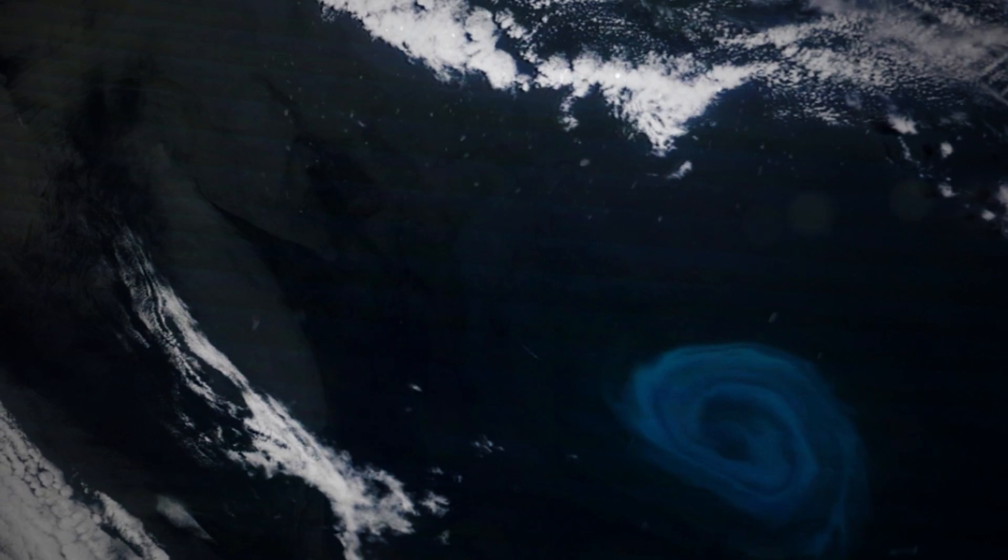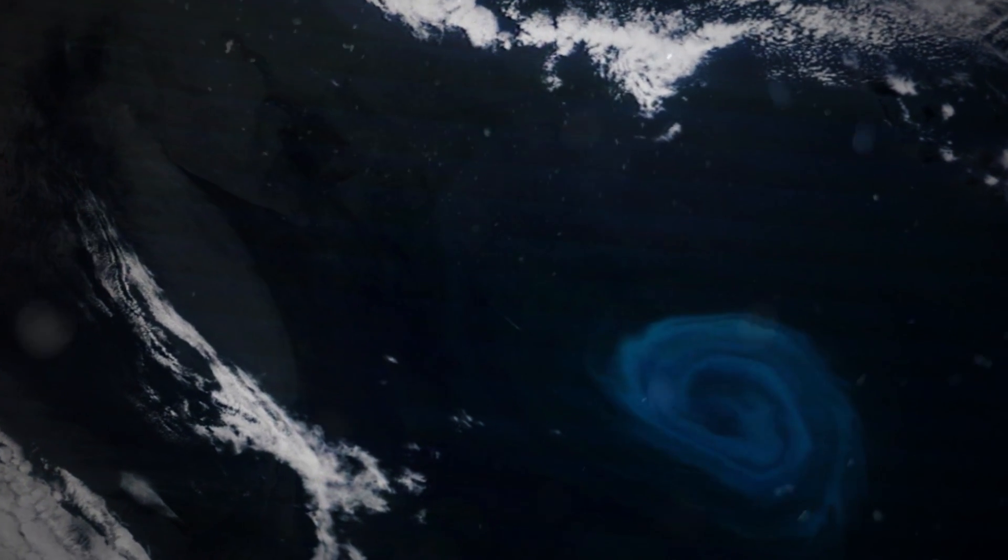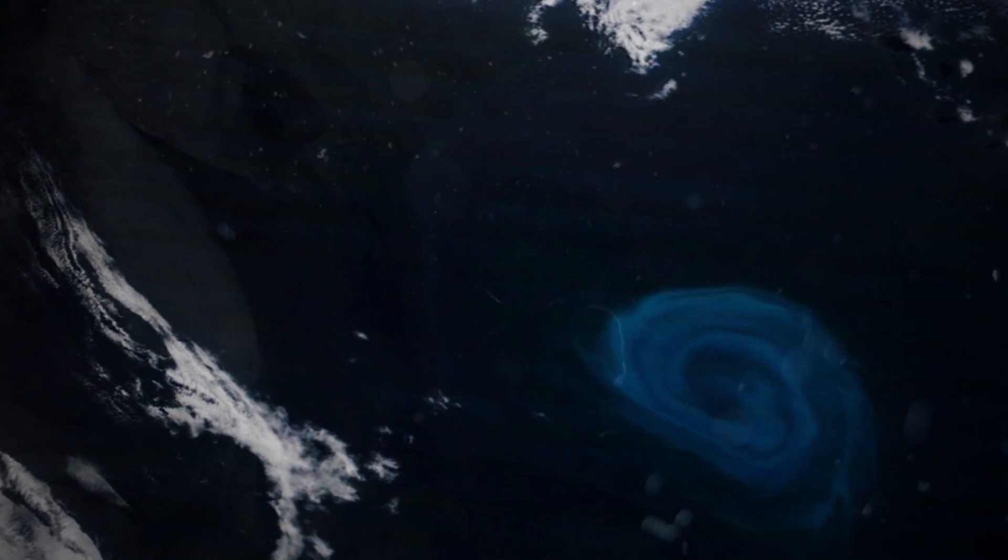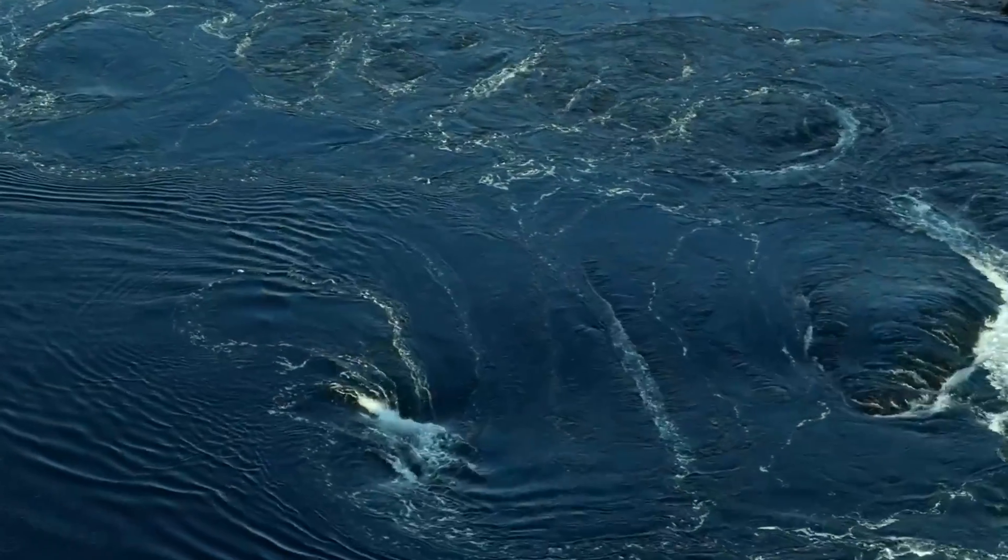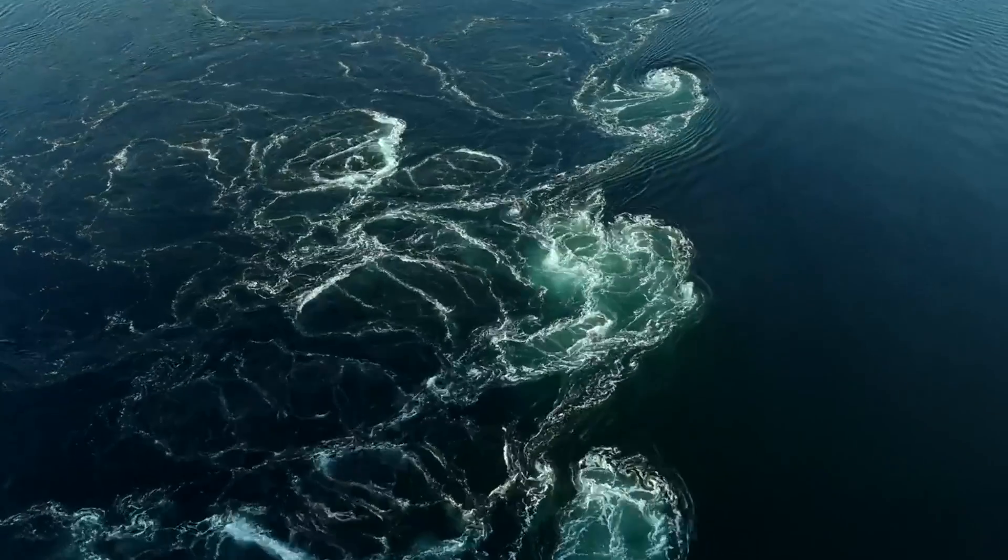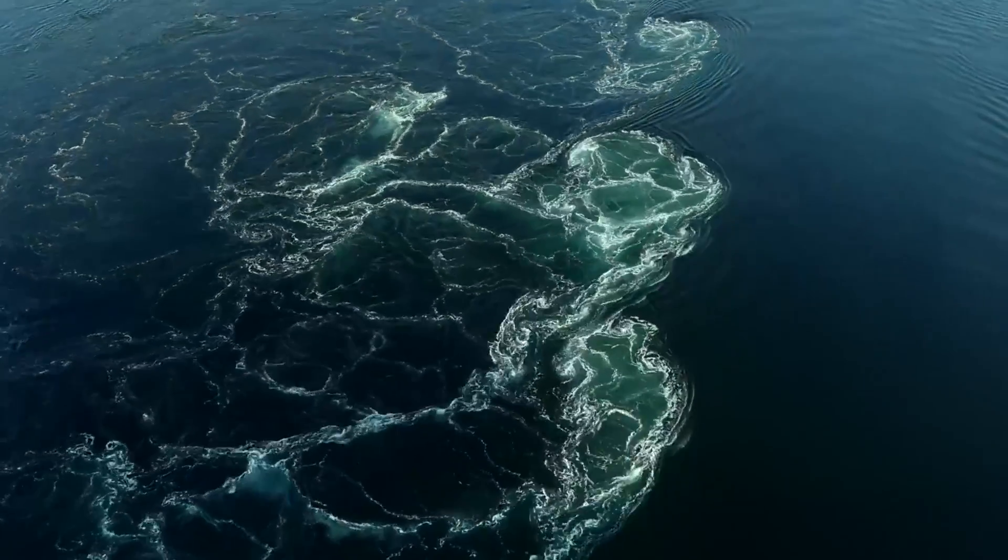According to scientists, ocean eddies may be to water what a black hole is to light. They're sometimes called maelstroms, which are massive ocean water vortexes that can swallow objects whole, trapping everything in their path.